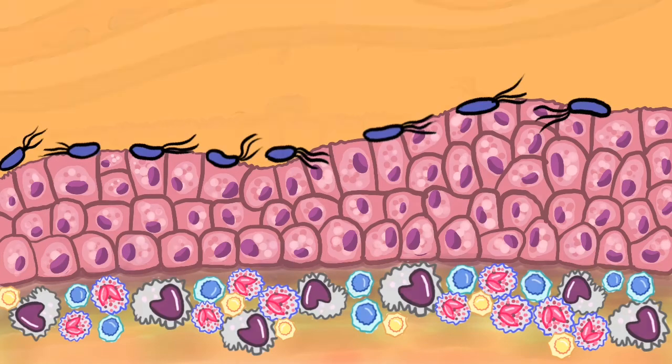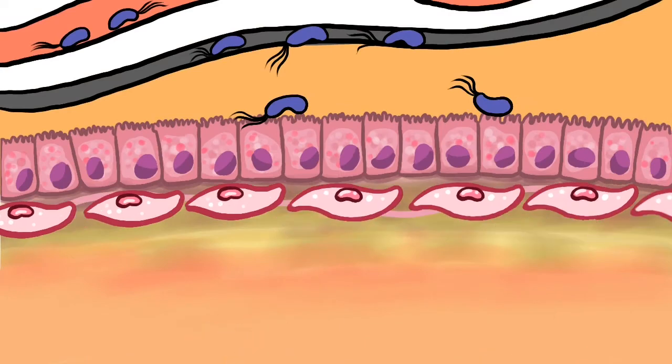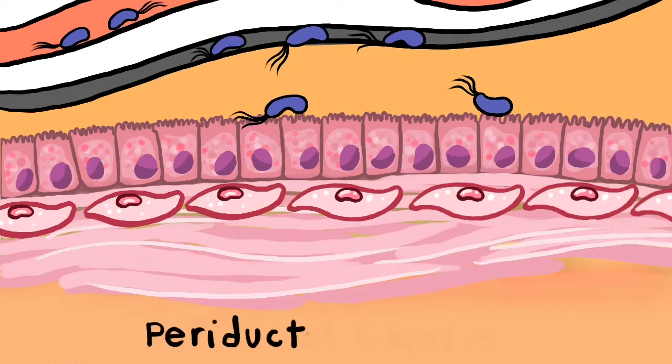When the party is gone, the cleaners, called fibroblasts, fix the damaged area. The area filled with fibrous tissue is called periductal fibrosis.